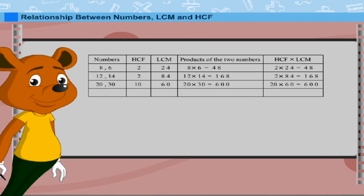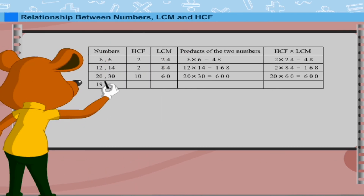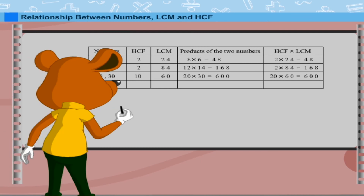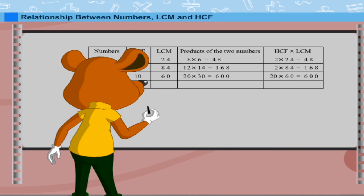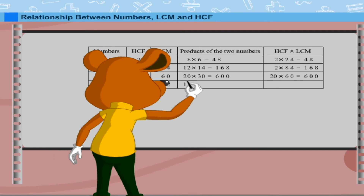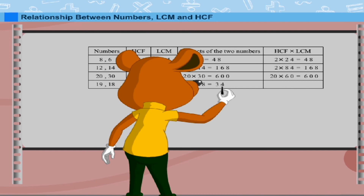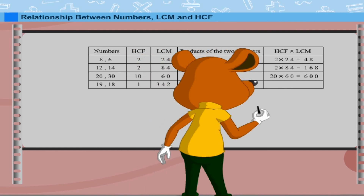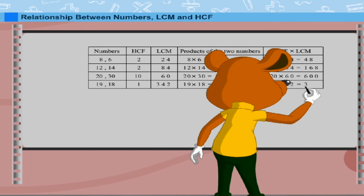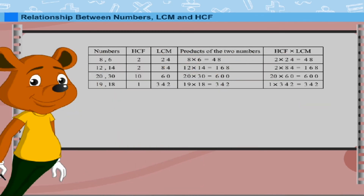The last set of numbers is 19 and 18. The HCF is 1 and the LCM is 342. The product is 342, and the product of HCF and LCM is also 342. Tobbe explains that the product of two numbers equals the product of their LCM and HCF, or LCM = product ÷ HCF.